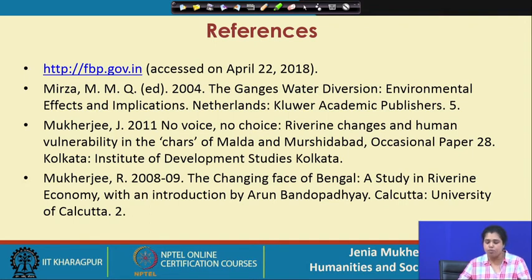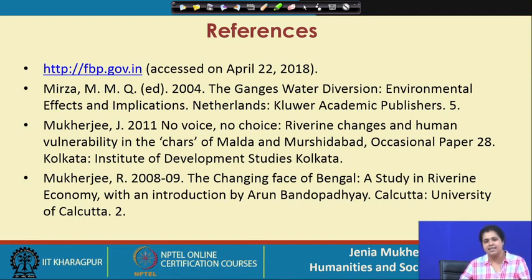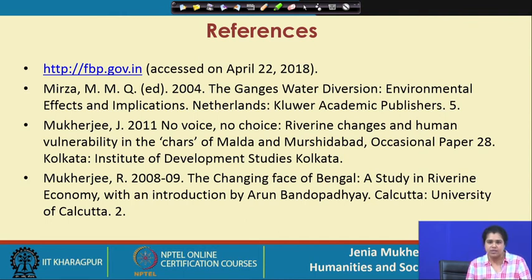The book by R.K. Mukherjee, 'Changing Face of Bengal', is a very important book which talks about how the history and geography of Bengal started getting altered since the 18th century due to changes in the courses of rivers — how changes in river courses can actually determine changes for particular cities, districts, and geographical spaces. This is where we really need to understand the cyclical relationship between rivers and society.